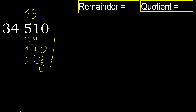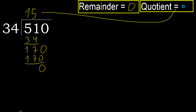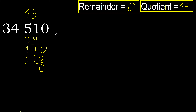Next — there is no number, therefore finish it. 510 divided by 34 is 15.